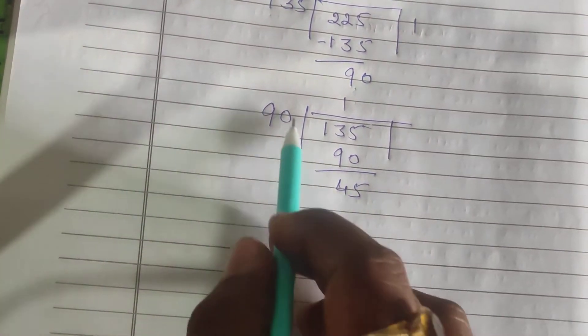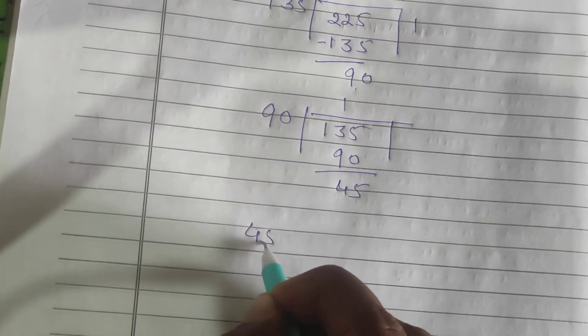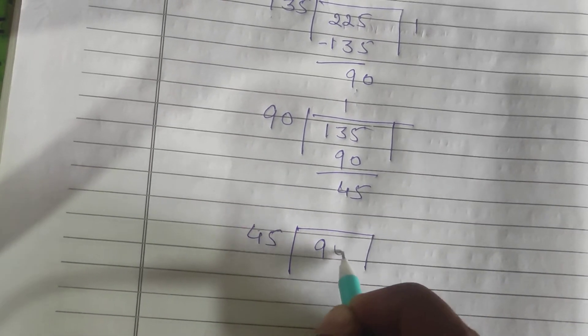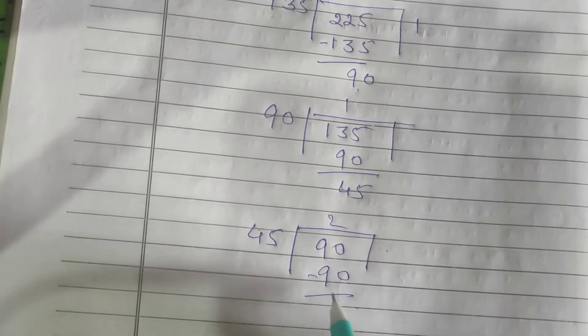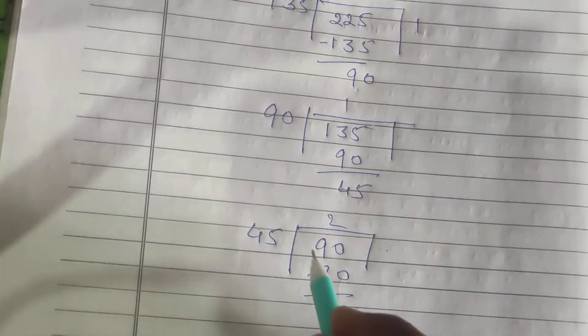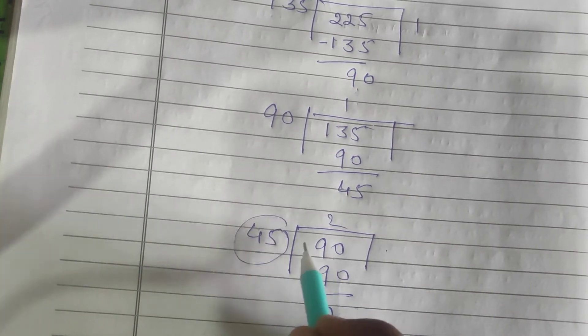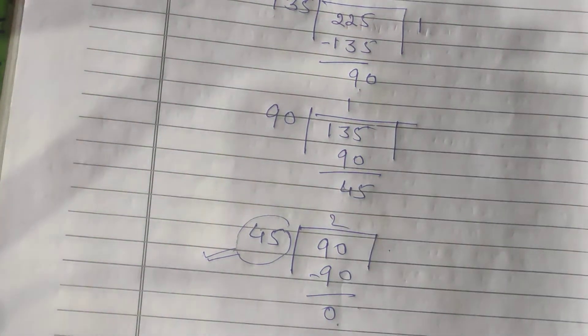Now we divide 90 by 45. We do this till we get remainder 0. So 45 into 90 will go two times. Our remainder is now 0. So our HCF is 45. This is the long division method.